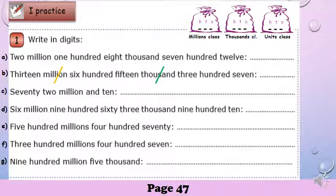We know that each class should have three digits — one for hundreds, one for tens, one for ones. So how many digits do we have in this number? We have nine digits, so we have to write nine dashes. And we separate the classes by comma.